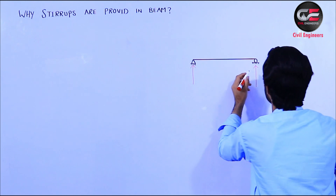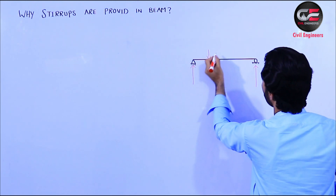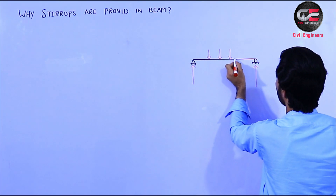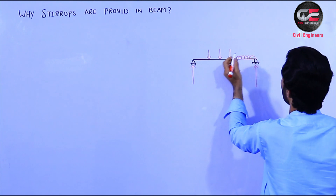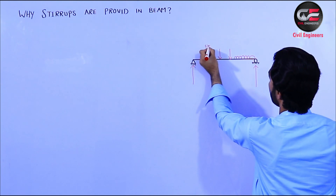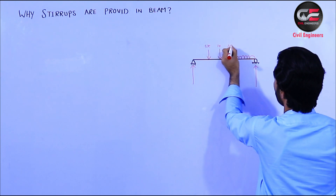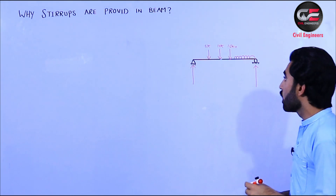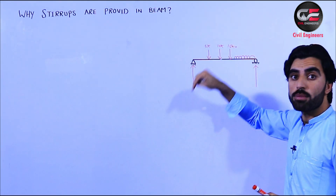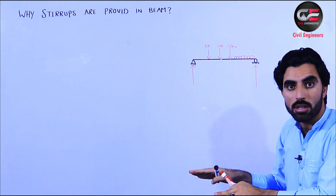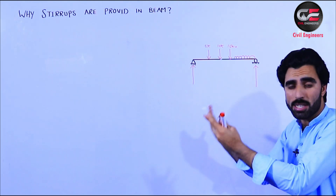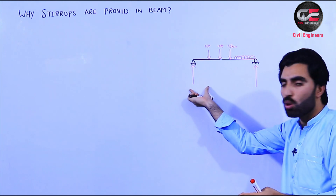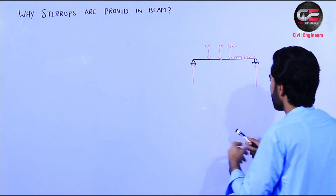If we apply load on the beam - for example, loads at different points and also a uniformly distributed load - this is 5 kilonewton, 10 kilonewton, 15 kilonewton, etc. - this is just an example. All the load which comes on the beam, the beam transfers this load to the columns, and the columns are the supports. So the beam transfers the load to the supports.